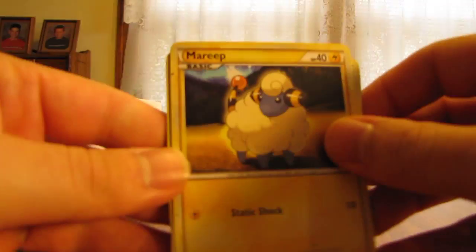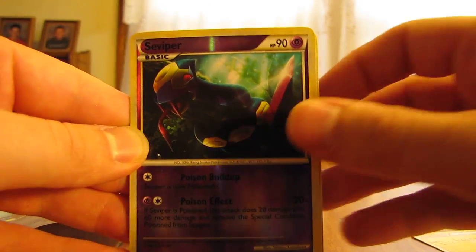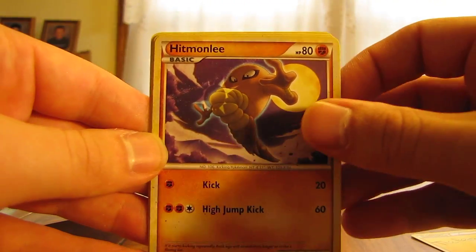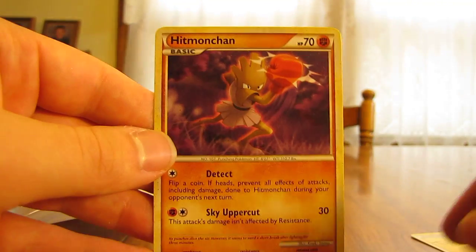So we have Mareep, Pidgey, Seviper Reverse, Houndour, Hitmonlee, Clefairy, Seviper, and Hitmonchan.